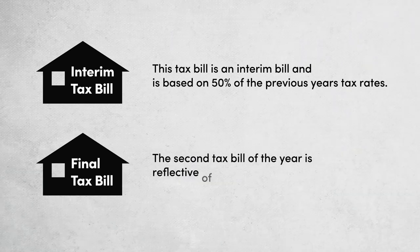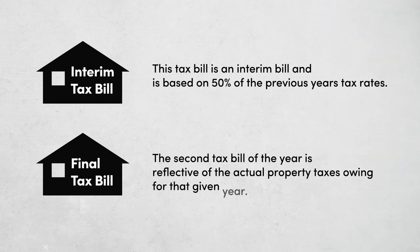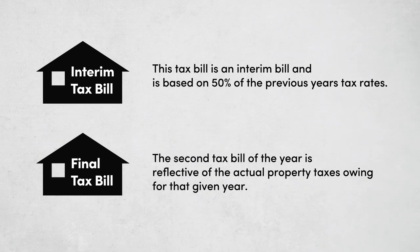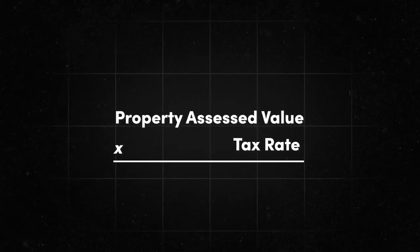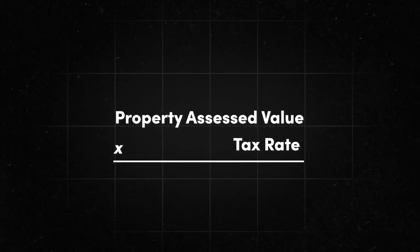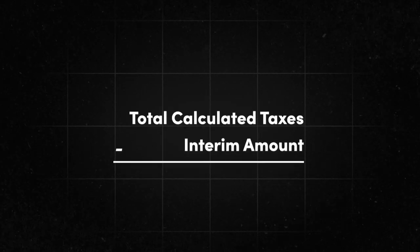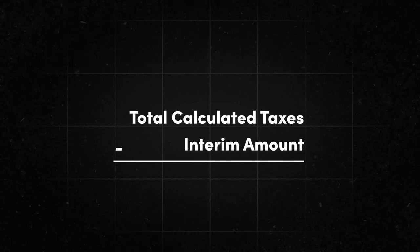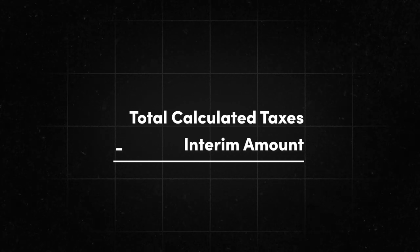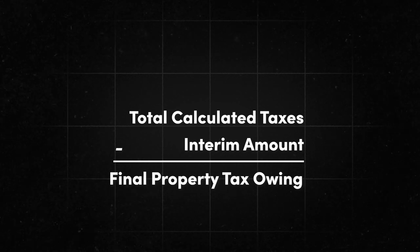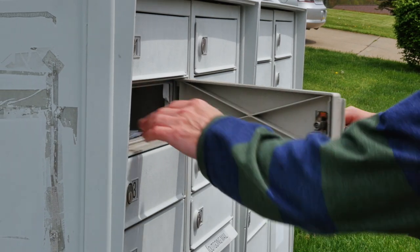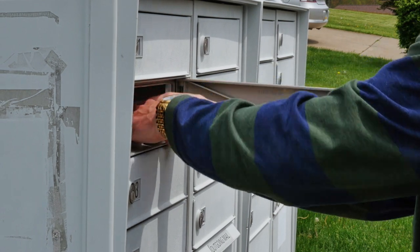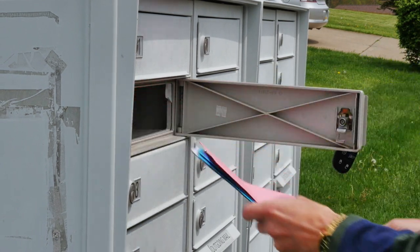The second tax bill of the year is reflective of the actual property taxes owing for that given year. The taxes are determined by multiplying the property assessed value by the tax rate. The interim amount billed earlier in the year is then deducted from the total calculated taxes to determine the final property taxes owing. This second bill is typically mailed in May with installment due dates in June and September.